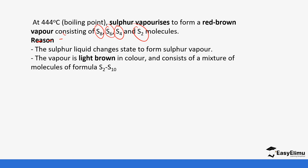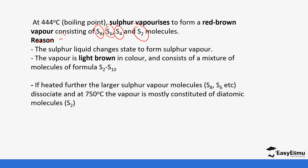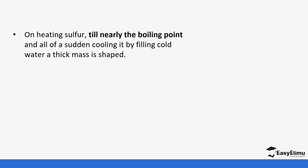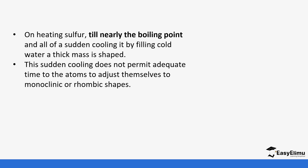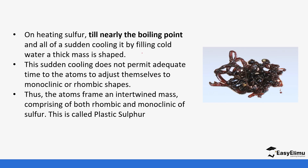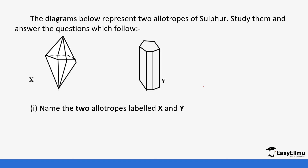The vapor is light brown and consists of a mixture of molecules from S2 to S10. On further heating to 750°C the vapor consists entirely of S2 molecules. If the light brown vapor is exposed to cold surfaces it condenses to a yellow solid called flowers of sulfur. If sulfur is heated to near boiling point and then suddenly poured into cold water, it forms a rubbery thick mass called plastic sulfur — the sudden cooling prevents atoms from arranging into rhombic or monoclinic form.